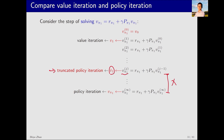Truncated policy iteration serves as a generalized form of both value iteration and policy iteration. When j equals one, truncated policy iteration becomes value iteration. When j approaches infinity, it becomes policy iteration. Theoretically, policy iteration requires an infinite number of steps, but this is practically impossible. In reality, we often compute a finite number of steps — for instance, evaluating whether the difference between v_pi_one^(j) and v_pi_one^(j-1) is sufficiently small, and stopping if it is. Thus, in practical applications, what we use is a form of truncated policy iteration, even when we aim for policy iteration. This highlights the importance of the truncated policy iteration algorithm.